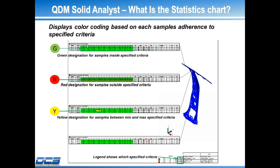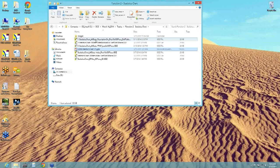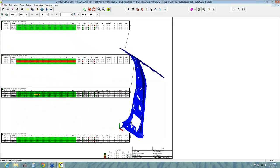Don't forget the most important part of this type of chart — you're actually color coding it just like we were seeing in the last example. We have the color coding on the legend by a specified criteria. We have the green designation for all the samples within the criteria, the red designation for all the samples out of the criteria, and the yellow designation for a sample that's between those criteria.